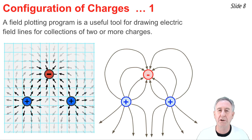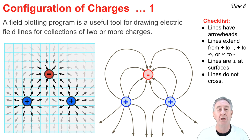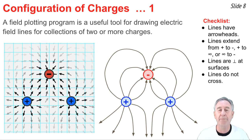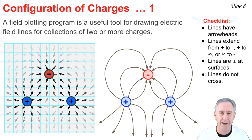When you're done, it's always good to go through a checklist to make sure you've done everything right. Have you put arrowheads on your electric field lines, and do those arrowheads point in the right direction? Have you drawn the lines perpendicular to the source charge's surface at the points where those lines join up with the surfaces? And finally, have you crossed any lines? Going through a simple checklist can help you catch some errors and perfect your electric field line diagram.